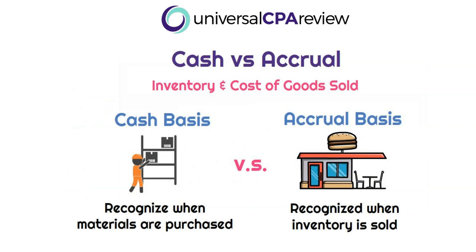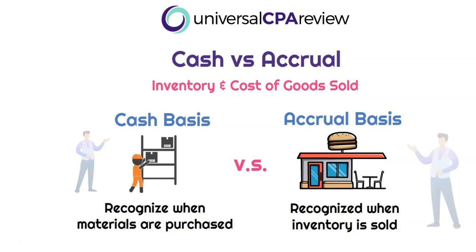So when it comes to inventory and cost of goods sold, there is a difference when talking about cash versus accrual. On the cash basis, cost of goods sold is based on when materials are purchased — that's when the cash outflow occurs. On accrual basis, we have to align cost of goods sold with our revenue — that's called the matching principle — so cost of goods sold is recognized when the inventory is sold to the end customer.